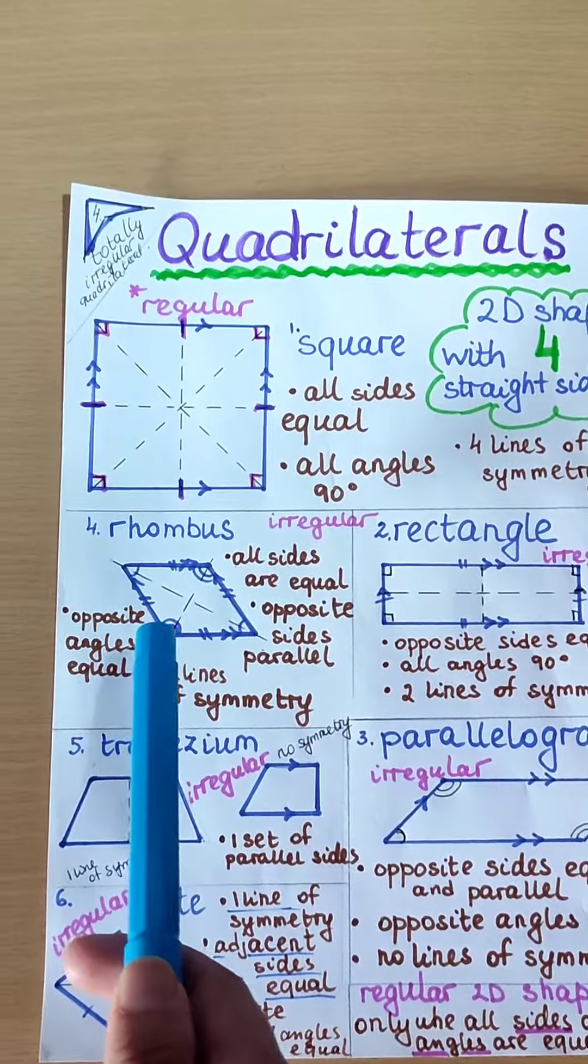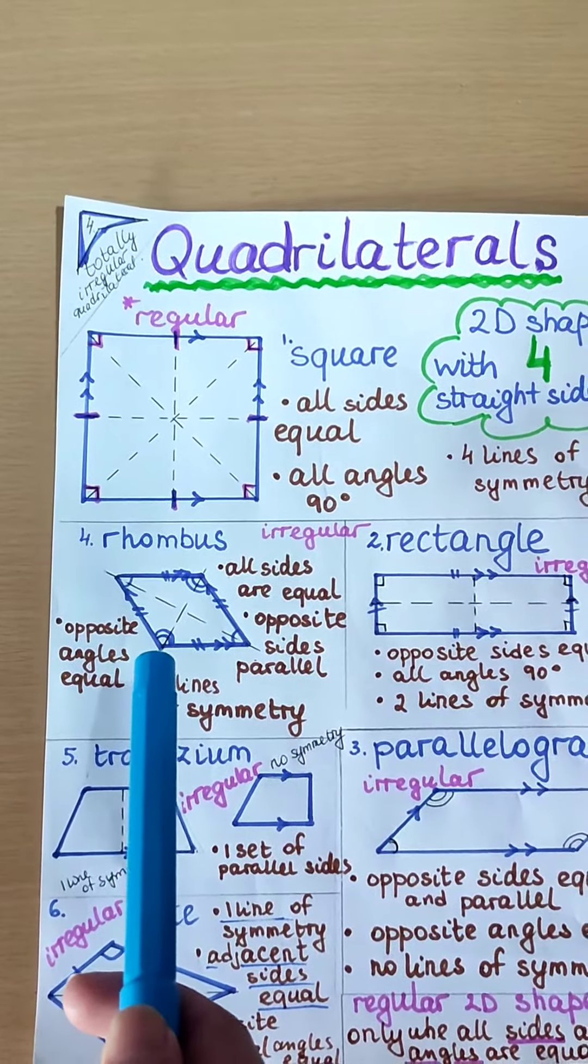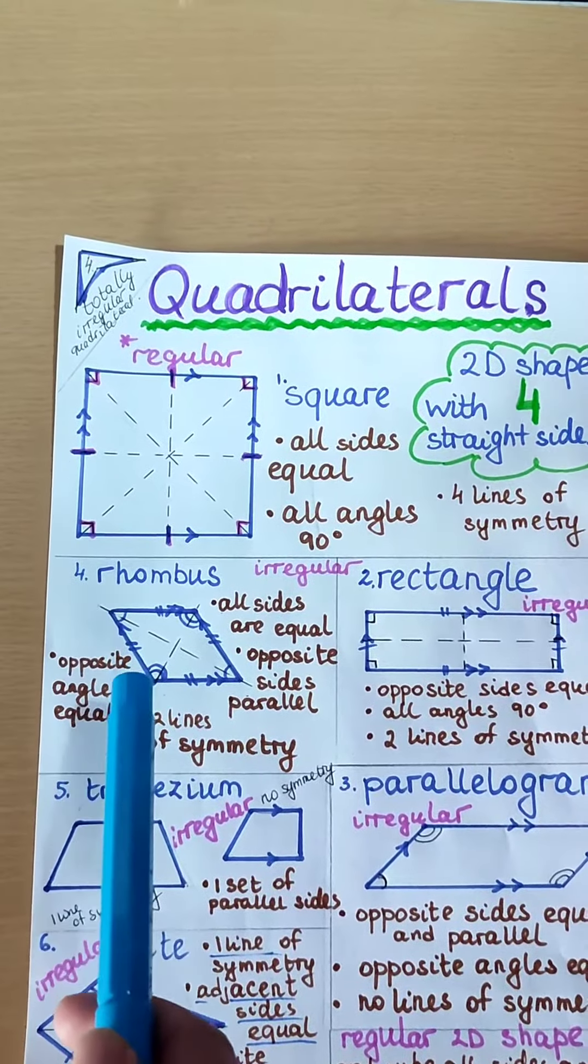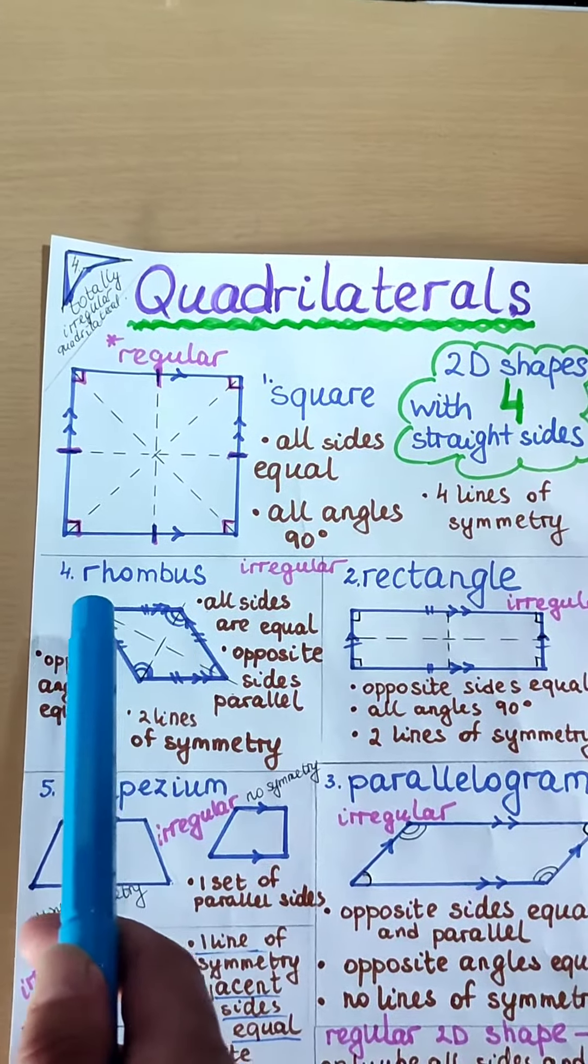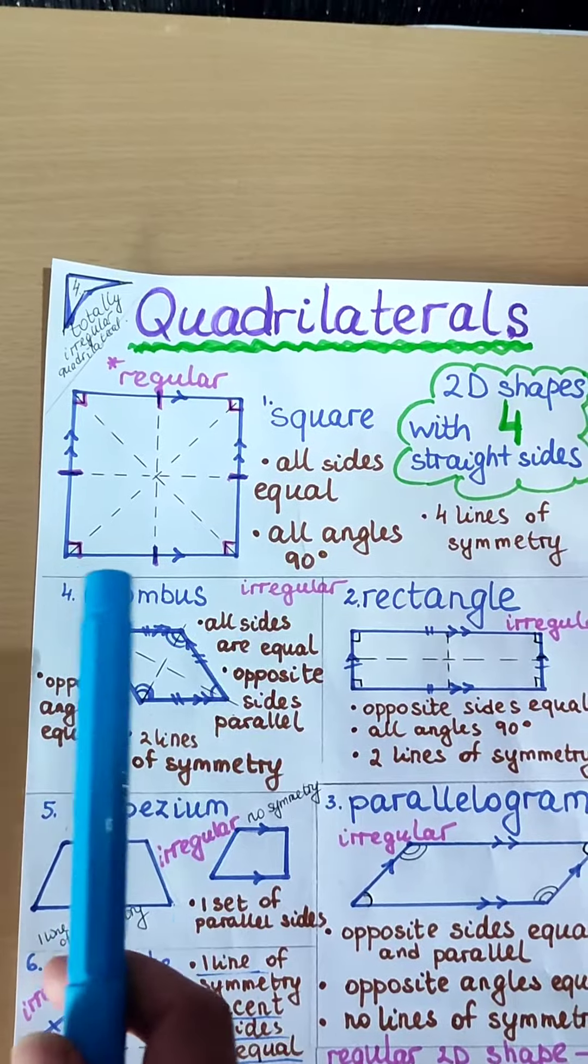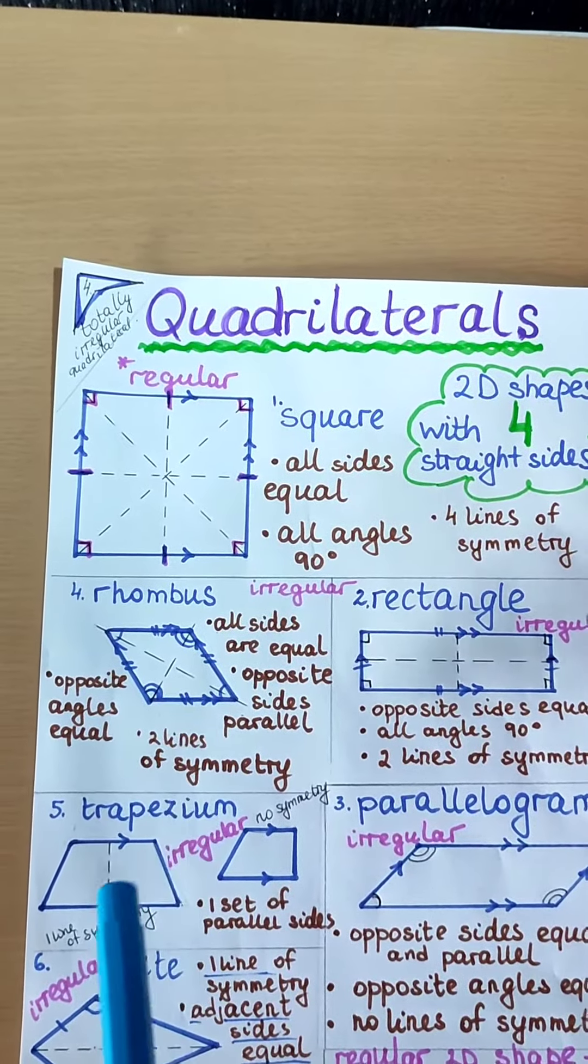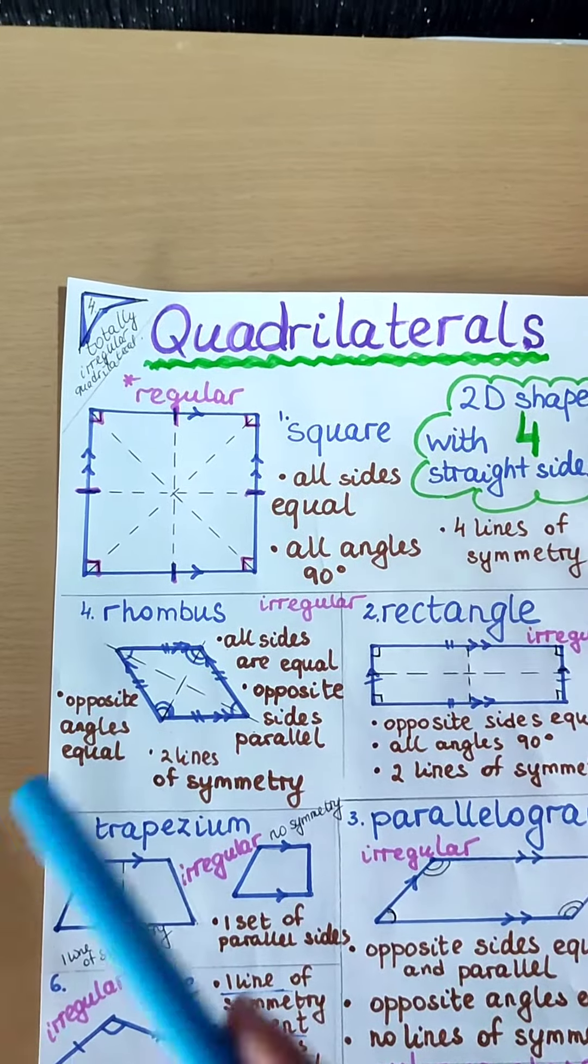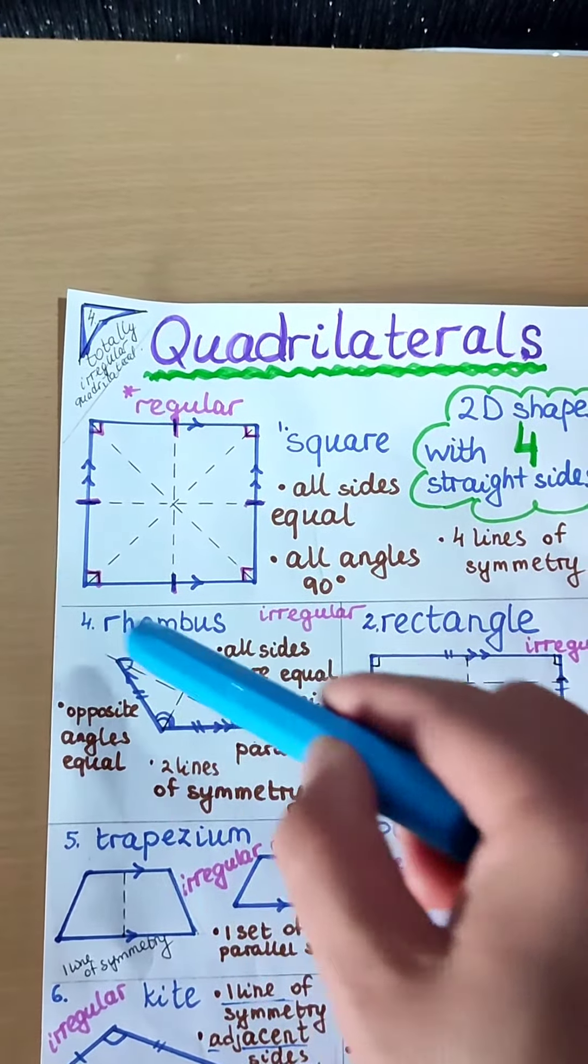This is a rhombus. Rhombus is like a slanted square. It's got all of the sides which are the same length, but the angles are not the same. The opposite angles are the same and it's got 2 lines of symmetry.